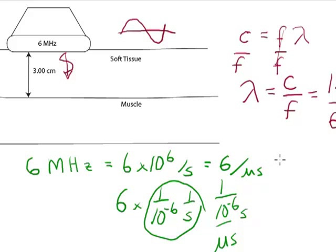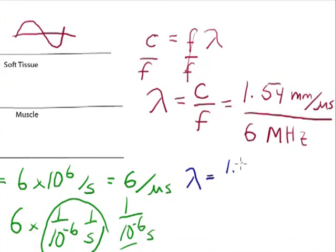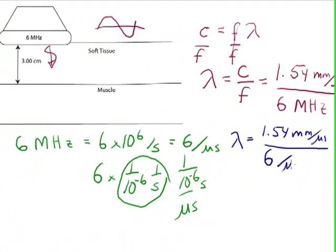And rewrite that one as lambda equals 1.54 millimeters per microsecond divided by, instead of 6 megahertz, I can just write 6 per microsecond. And so my wavelength.